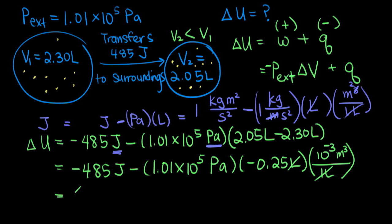So that gives us that delta U, our change in internal energy, is negative 485 joules. And then if we plug this all into our calculator to calculate the work, we get positive 25.25 joules. So if we add our heat and our work here, we get that the overall change in internal energy for this process is negative 460 joules.